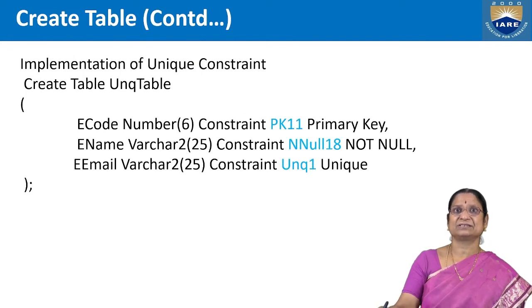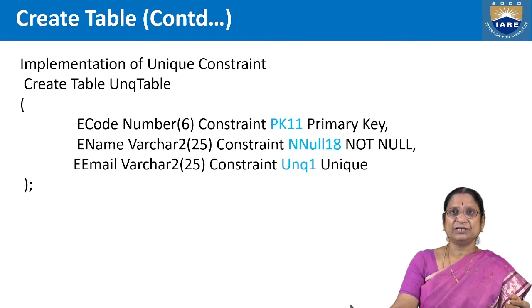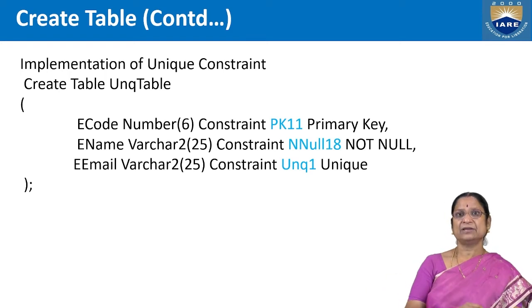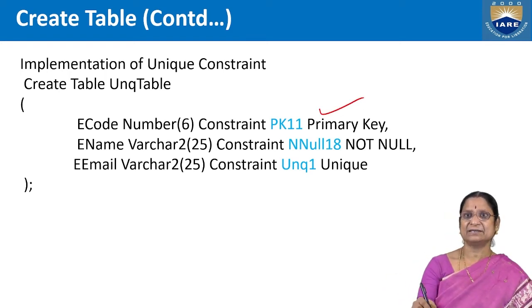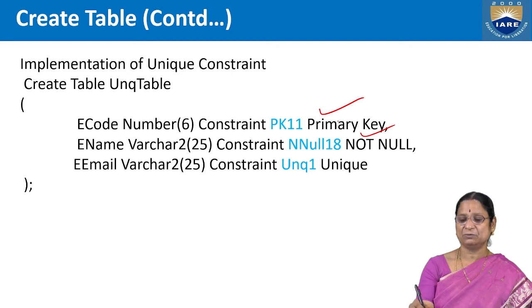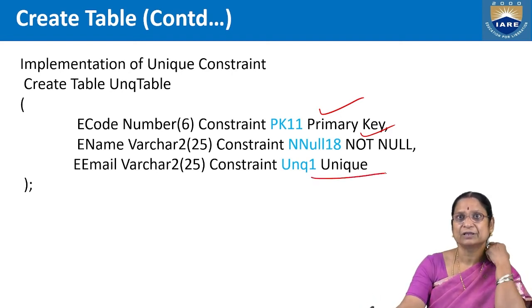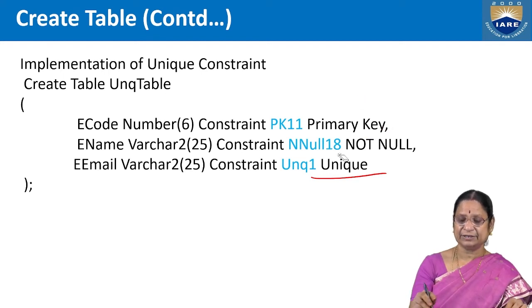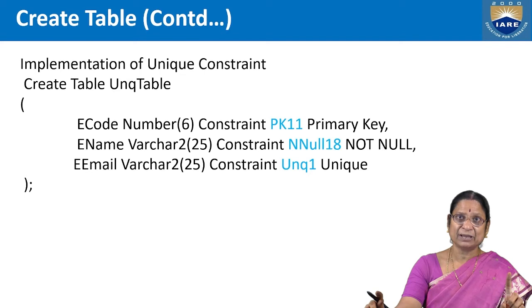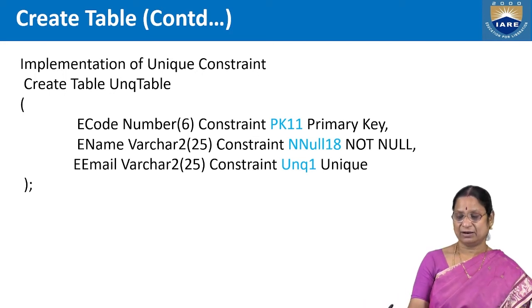The unique constraint is used to represent candidate keys. For example, an employee table may have employee code as primary key and email as a unique constraint — since there can only be one primary key, the email is represented as unique. The key difference between primary key and unique: primary key does not allow null values, but unique does allow null values.